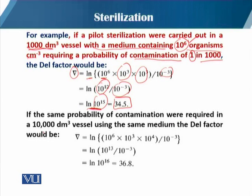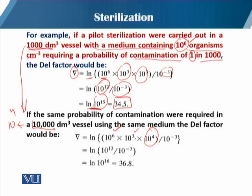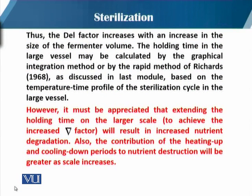Now if the same probability of contamination is required in a volume of 10^4 liters (10,000 liters) using the same medium, then the del factor changes. The volume increases from 1000 liters to 10,000 liters. Recalculating: the exponents give 6 + 4 = 10 for the load, plus 3 for the probability, giving ln(10^16), which equals approximately 36.8. Thus, by increasing the vessel size, the del factor increases from 34.5 to 36.8.